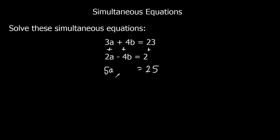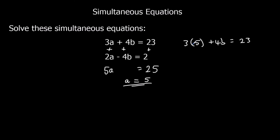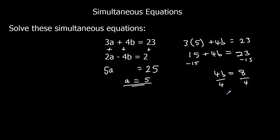3a plus 2a is 5a, and 4b minus 4b is 0, and 23 plus 2 is 25. So 5a is 25 — divide both sides by 5, a is 5. Again I'm going to find b by substituting it in. I'll use the top one: 3 times a which is 5, plus 4b equals 23. That's 15 plus 4b equals 23. Take 15 away from both sides, so 4b is equal to 8, and divide both sides by 4, so b is 2.